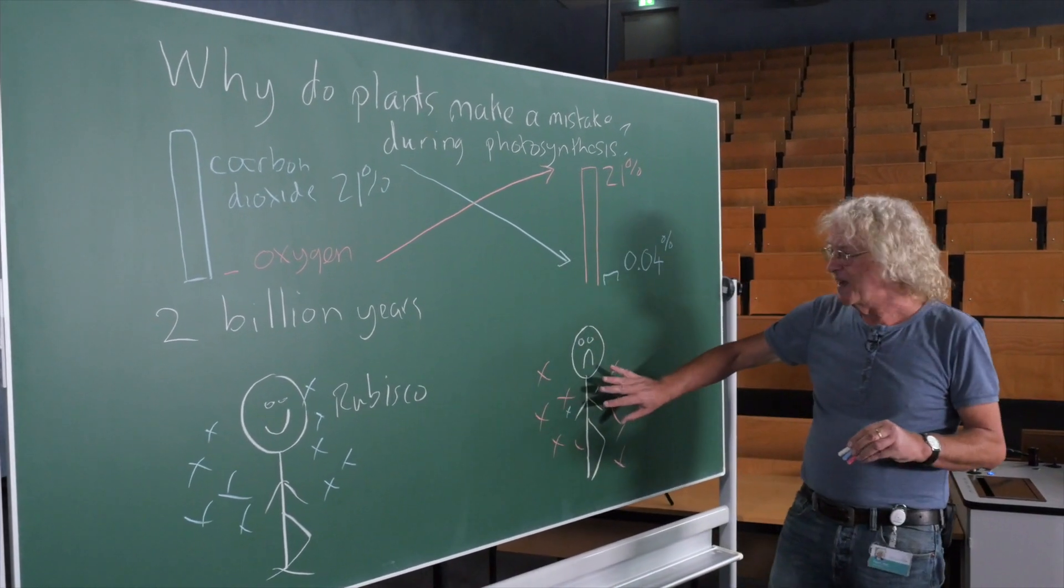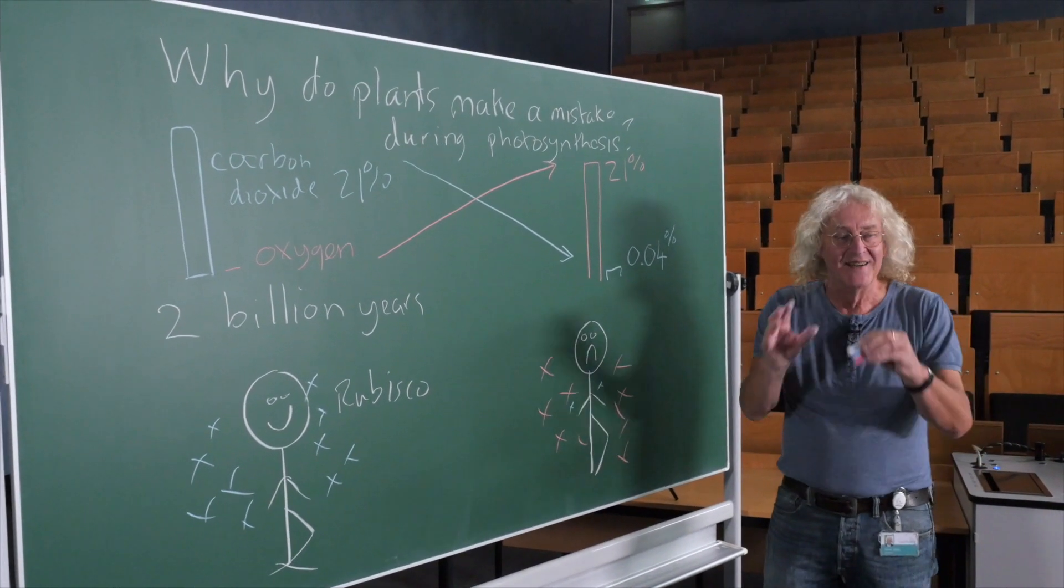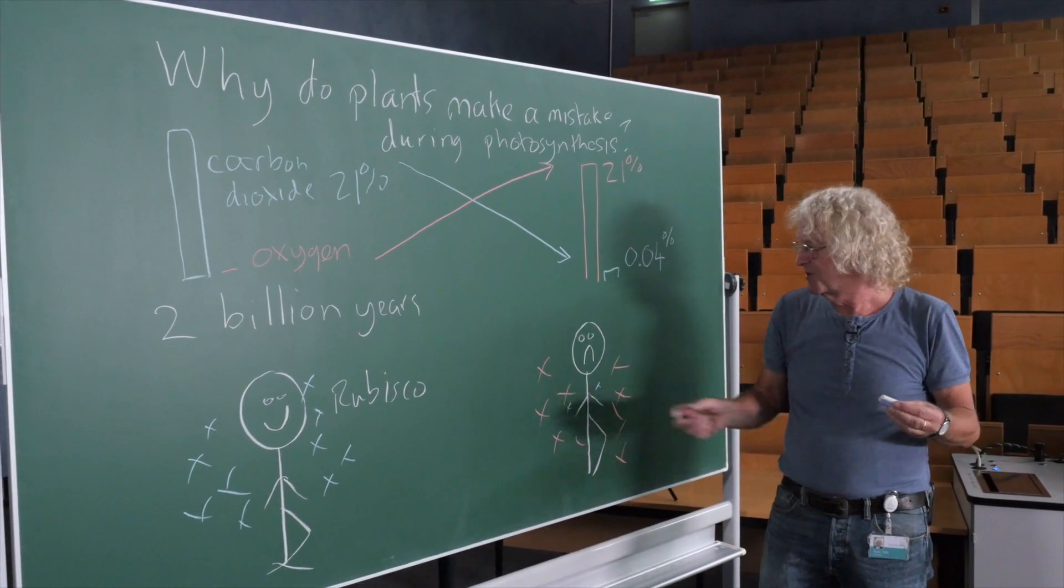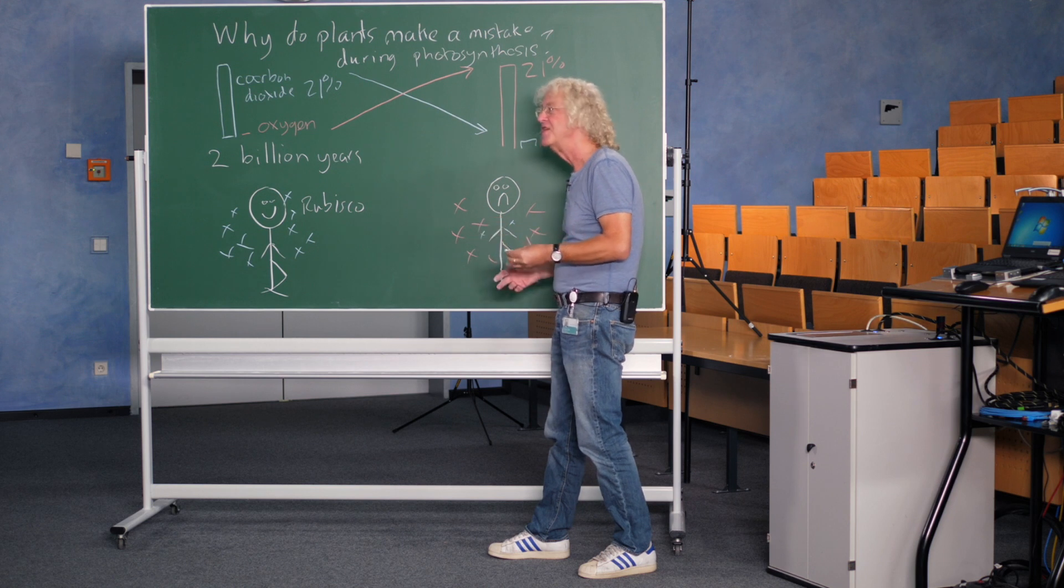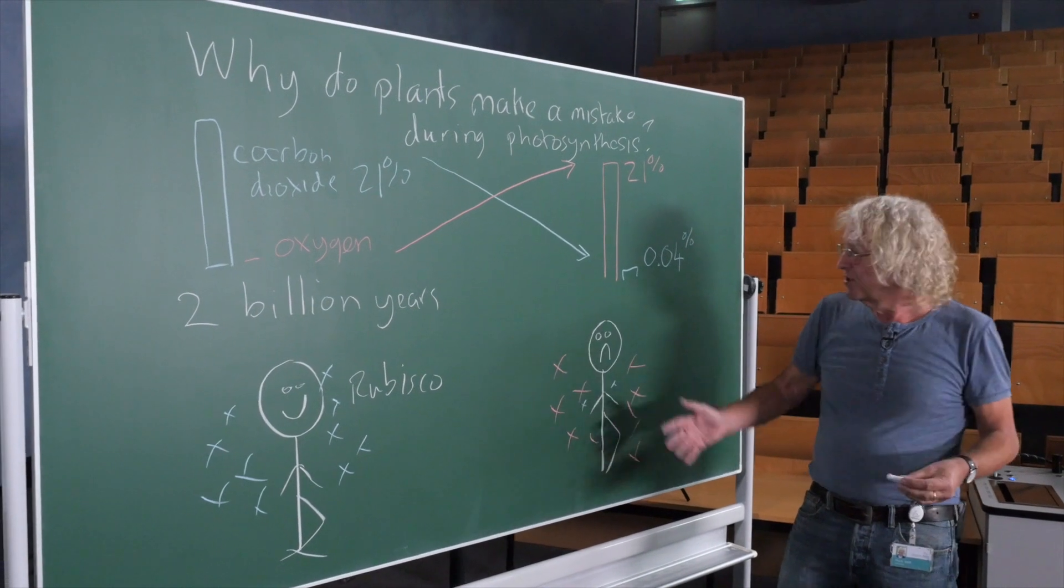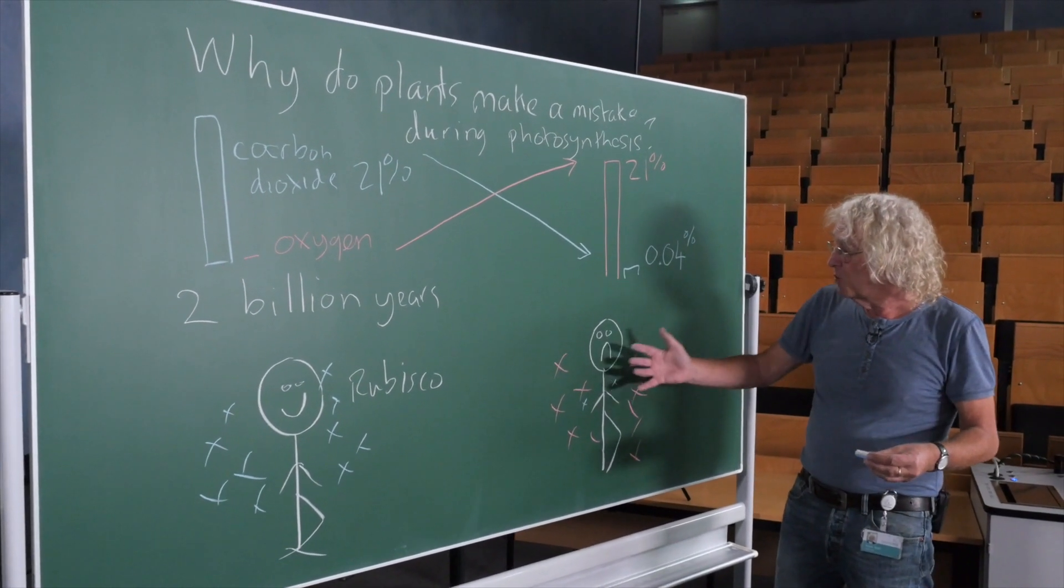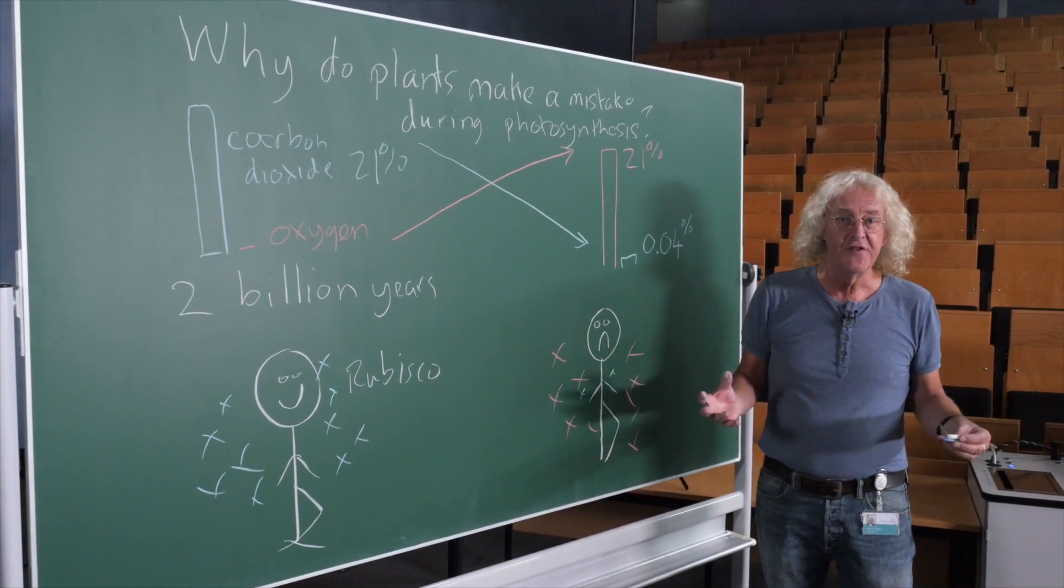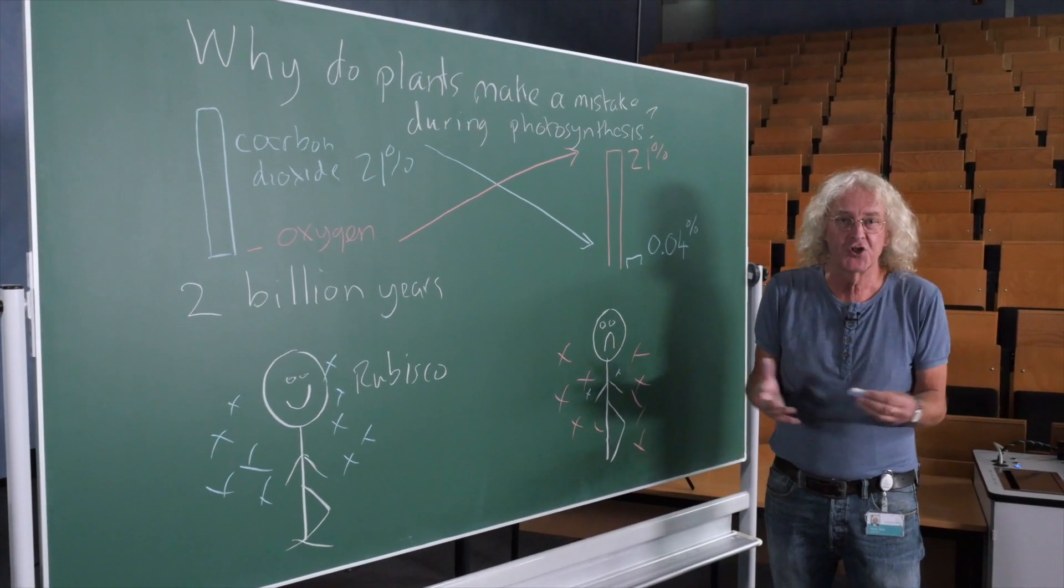Rubisco has got better. It has actually got better at distinguishing between carbon dioxide and oxygen, but it has also got slower. It is now very slow, and this means that Rubisco is a third to a half of the protein in a leaf. It can't go much slower.